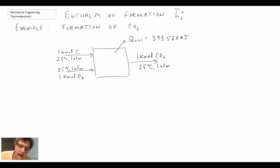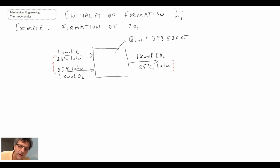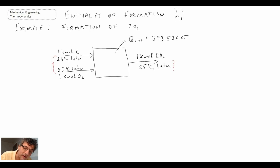This is the system we'll be analyzing. On the inlet we have a carbon stream and a diatomic oxygen stream — both at 25 degrees C, one atmosphere. On the product side, coming out of this vessel in a steady flow system, we have carbon dioxide, also at 25 degrees C, one atmosphere. We have heat coming out of our system, and we're going to begin by applying the first law.